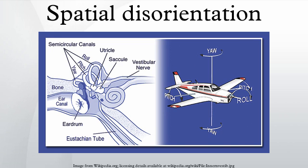Once an aircraft enters conditions under which the pilot cannot see a distinct visual horizon, the drift in the inner ear continues uncorrected. Errors in the perceived rate of turn about any axis can build up at a rate of 0.2 to 0.3 degrees per second. If the pilot is not proficient in the use of gyroscopic flight instruments, these errors will build up to a point that control of the aircraft is lost, usually in a steep, diving turn known as a graveyard spiral.